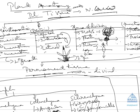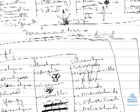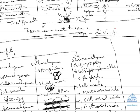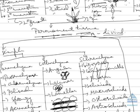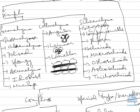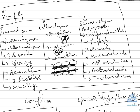Permanent tissues are those tissues which are non-dividing and have stopped division. Tissues that have just stopped division are known as simple permanent tissue. Those which are complex because they contain different types of simple tissues are known as complex permanent tissue. Those which are secretory in nature are known as special type tissue.